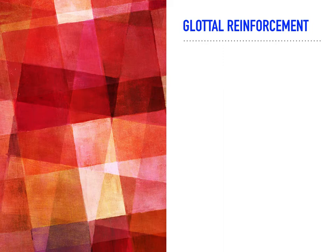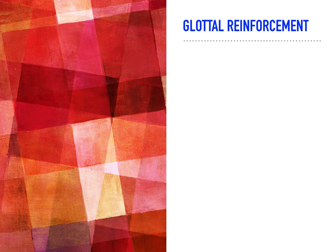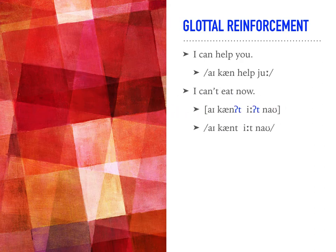What you will have to know is what we call glottal reinforcement. If we look at the word 'letter', when we actually transcribe that word, you would have to know that we would say 'let-ta', but the glottal noise that comes in is placed right before the T. So if we look at 'bottle', it becomes 'bo''tal', and if we look at 'water', it becomes 'wo''tal'. Looking at glottal reinforcement in larger sentences like 'I can help you' and 'I can't eat now', this is how you would transcribe these sentences and recognize where glottal reinforcement takes place.